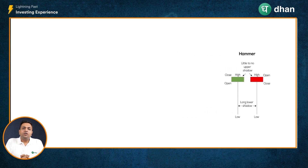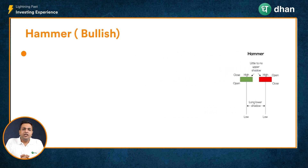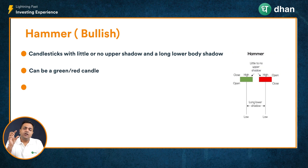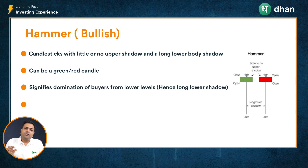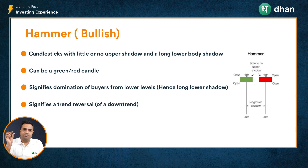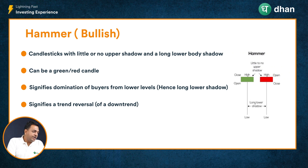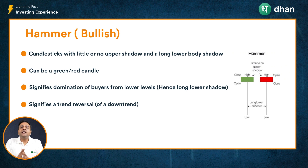The color of the candle is not of much significance here because it can either be a green body candle or a red body candle. What is important is the psychology of the market, which states that the prices went down, but the buyers were able to push the price back up and close the market at a price very close to the open price. Hence, you have a small body and a long lower wick, which signifies the dominance of buyers from lower levels and is indicative of a potential pause or reversal of the downtrend.